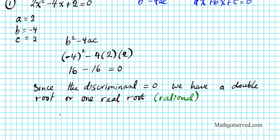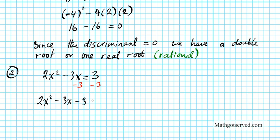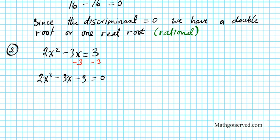Now let's take a look at number 2. What if we had a quadratic equation of the form 2x squared minus 3x equals 3? Now before we determine a, b, and c, we must place this in standard form. Is this in standard form? Absolutely not, because we have a constant on the right side. Remember it has to be equal to 0 with the variables in the same order of power. So we'll subtract 3 from both sides, and that will give us 2x squared minus 3x minus 3 equals 0.